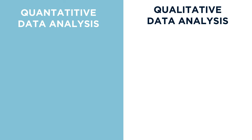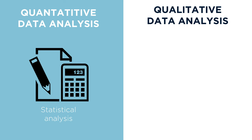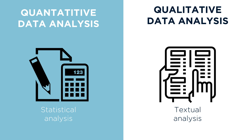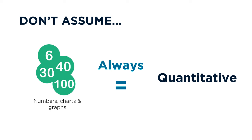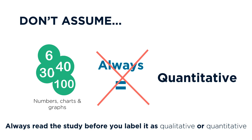Because methods are different, data analysis techniques also vary between quantitative and qualitative studies. Quantitative studies will feature statistical analyses, while qualitative studies might use text analysis and coding for themes in order to interpret data. While you'll probably see more numbers, charts, and graphs in a quantitative study, be careful — just because you see these doesn't automatically mean the study is quantitative. Qualitative studies might report basic demographic information numerically before diving into qualitative analysis, so it's always important to read the study for additional information.